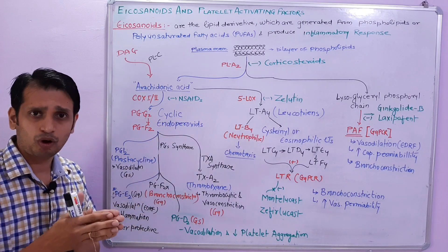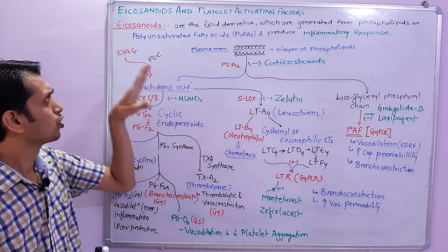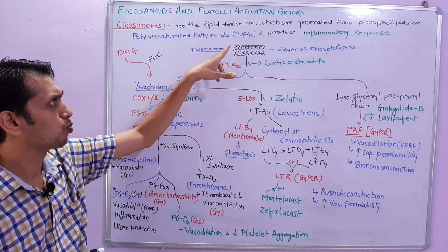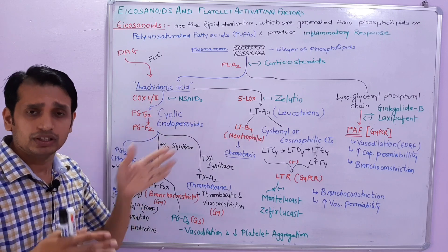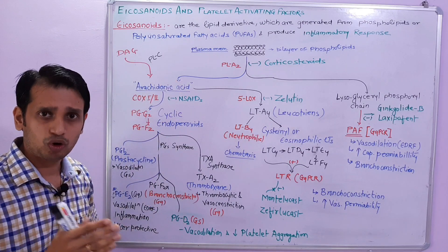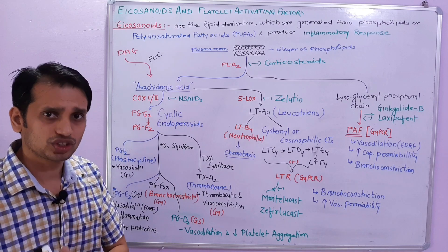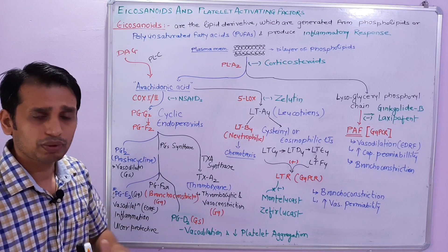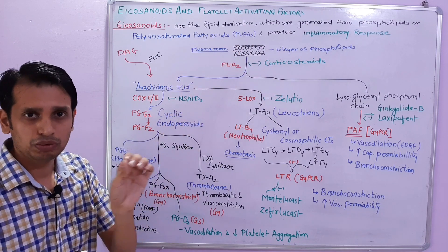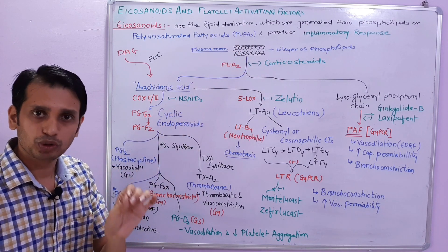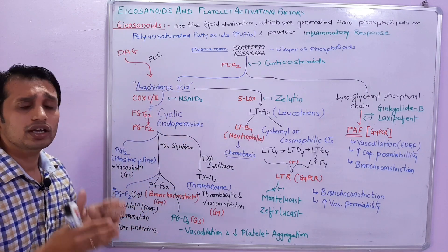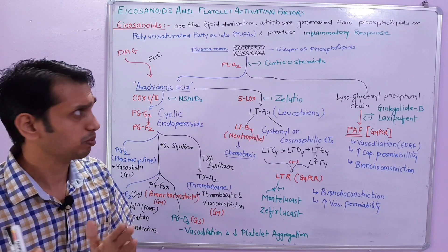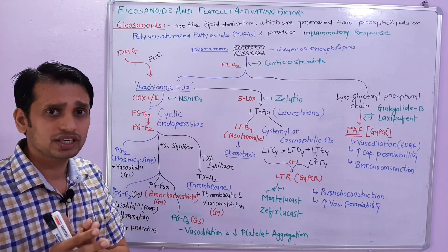These are basically generated from the phospholipids or polyunsaturated fatty acids, which are known as PUFAs. Eicosanoids are mainly responsible for the inflammatory response or asthmatic response. These phospholipids are polyunsaturated fatty acids which have 20 carbon atoms in the chain length, and they are mainly responsible for the inflammatory response.